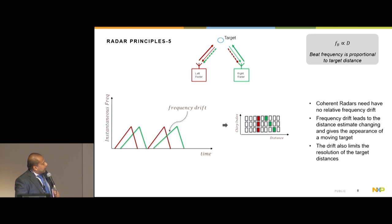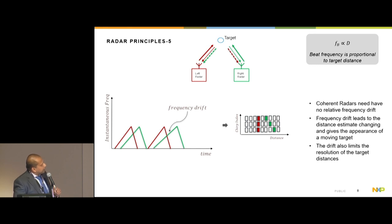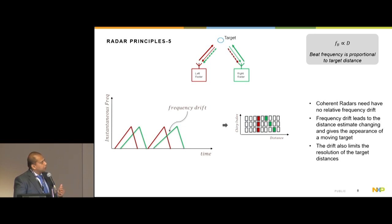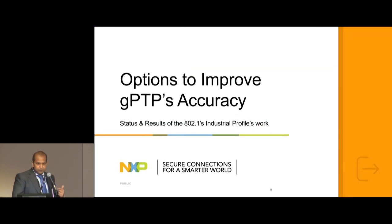The second problem is that the frequency sweep of the two radars may differ slightly — a relative drift in the chirp frequency. Since beat frequency is proportional to distance, with frequency drift the right radar appears to the left radar as a moving target, even under static conditions. So frequency drift is another parameter we want to contain, as it limits radar resolution. These two issues — time inaccuracy and frequency drift — set the problem statement, and this is where GPTP comes in as the common synchronization technology.